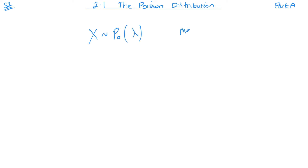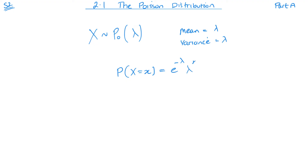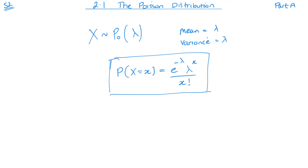The mean is lambda and the variance will also be lambda. If you have a look in your book, it goes through an example with actual values to show that working out the mean and the variance gives you the same value. In terms of the formula that we need, it's quite straightforward: the probability of X equaling x is equal to e to the minus lambda, multiplied by lambda to the power x, over x factorial. This is the formula for individual probabilities, and later we will look at cumulative tables as well.